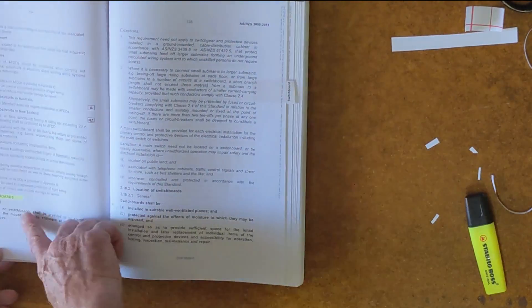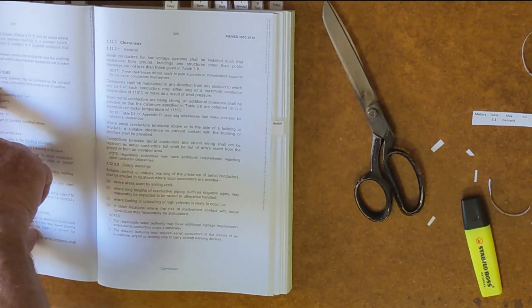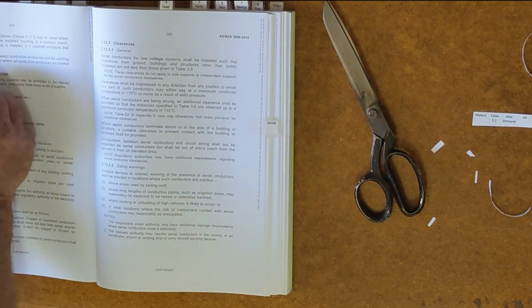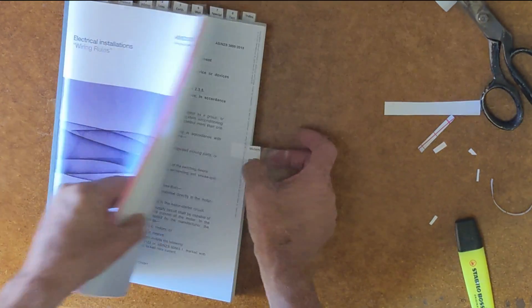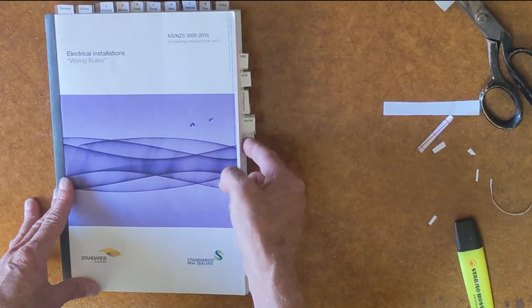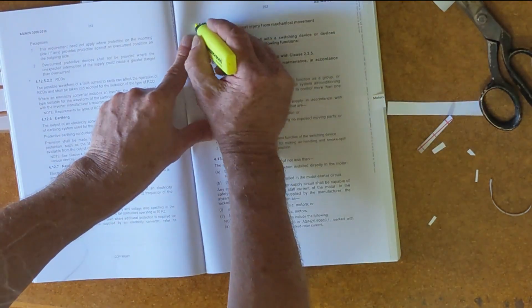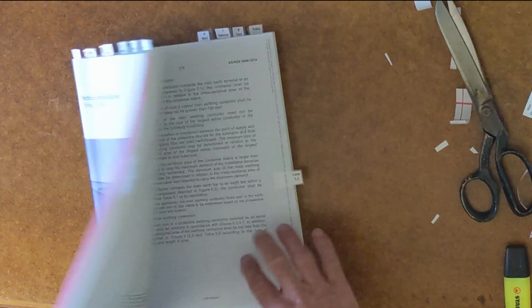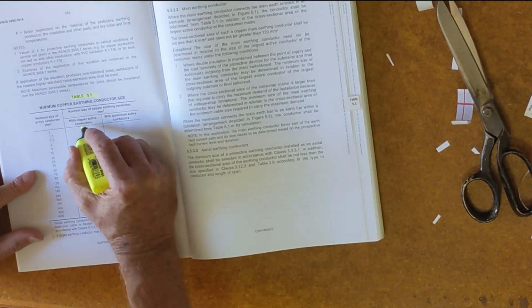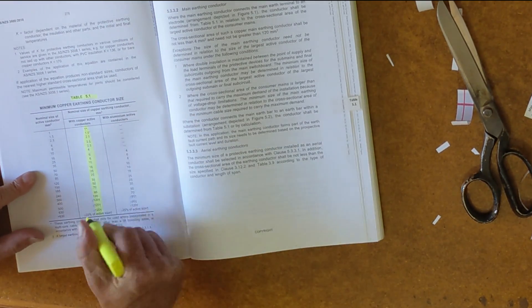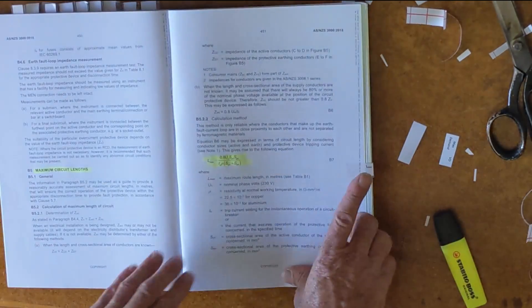Switchboards, aerials, motors, table 5.1, maximum circuit length. Here's the formula. Maximum demand.